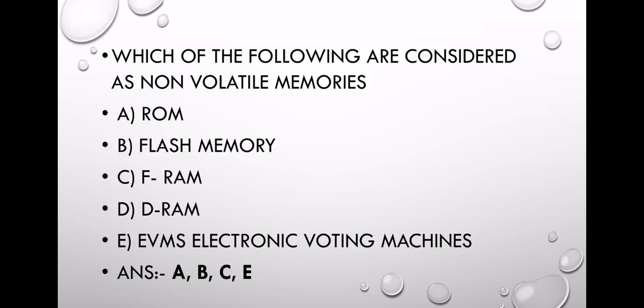Which of the following are considered as non-volatile memory? ROM is non-volatile. Read only memory, flash memory. Next, EPROM. EVMS are electronic voting machines.